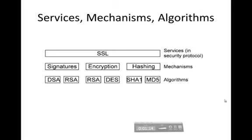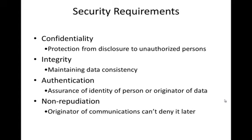Before describing each one, we'll start talking about security requirements — the CIA model. Confidentiality is the privacy of the data. You don't want anyone to see your data. When you send a message to your friend or via email, you don't want anyone to understand the data that you sent.